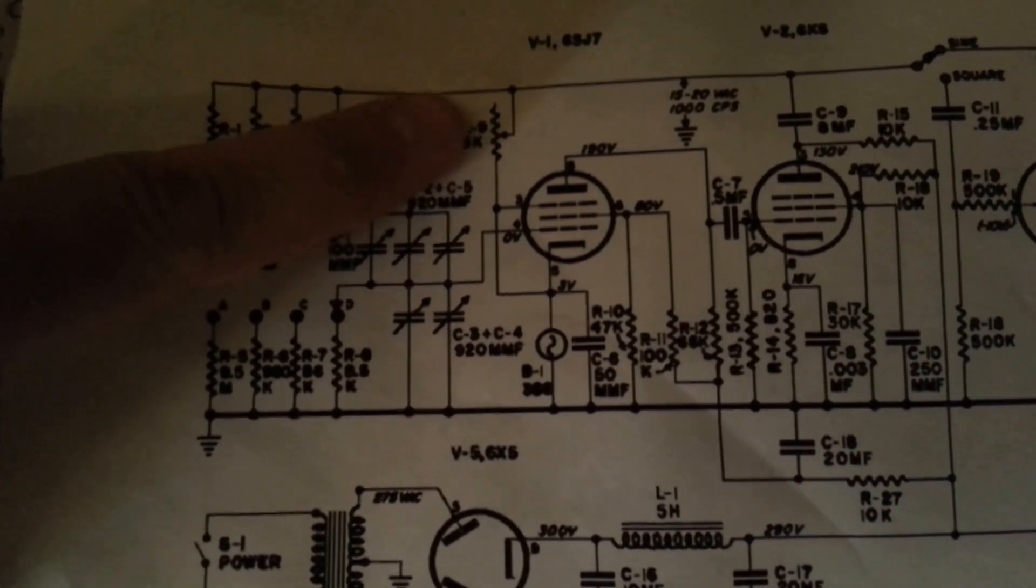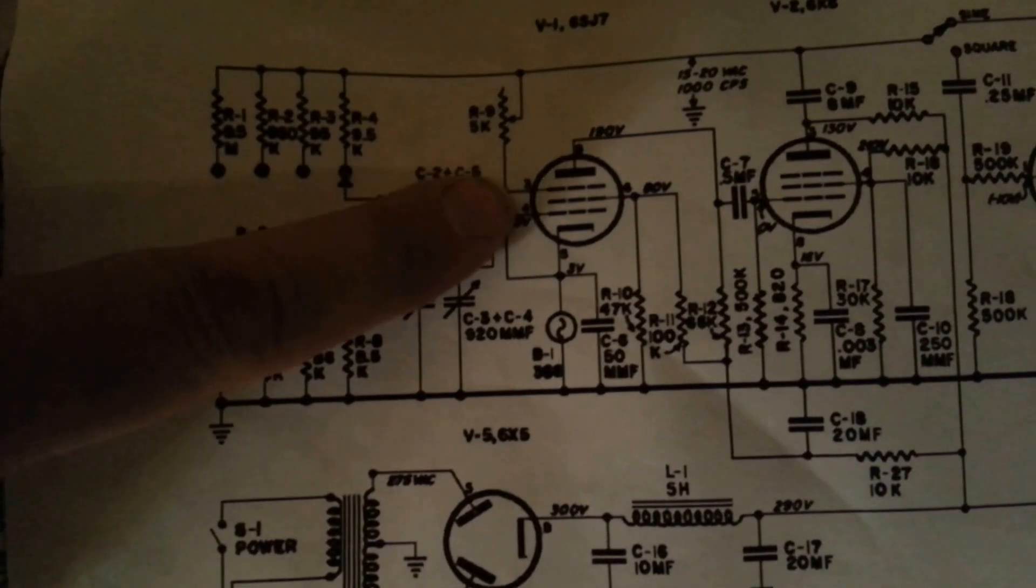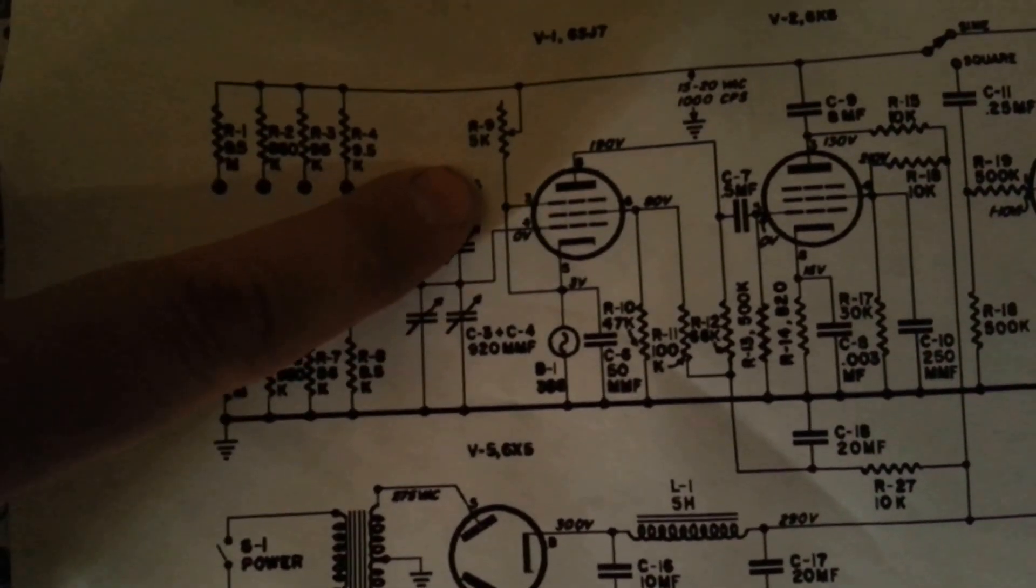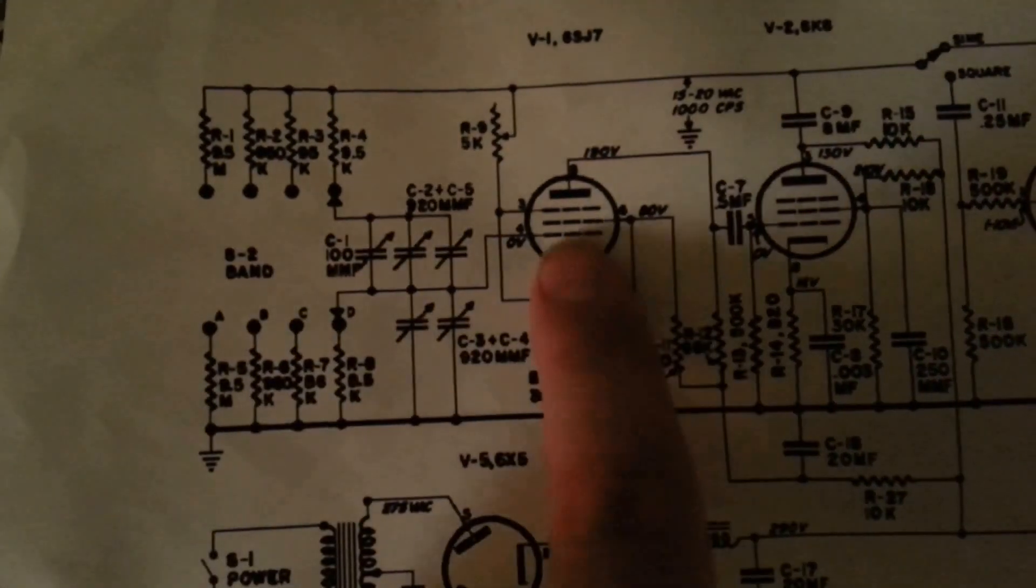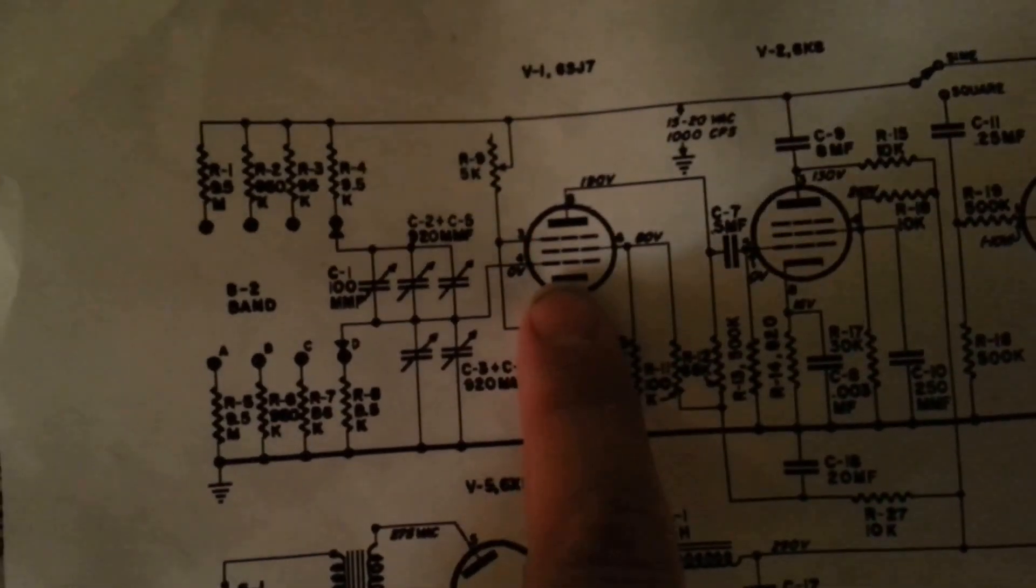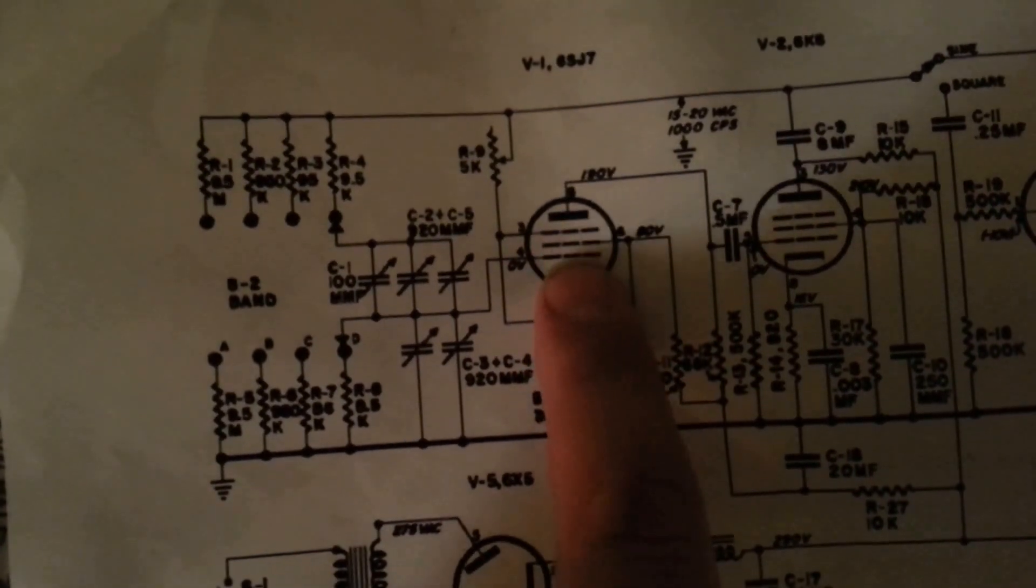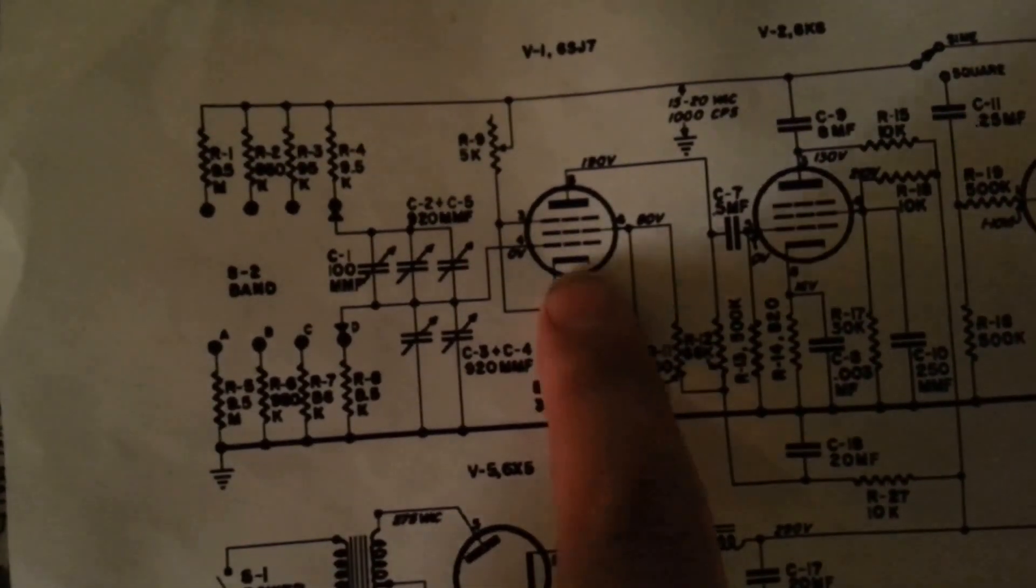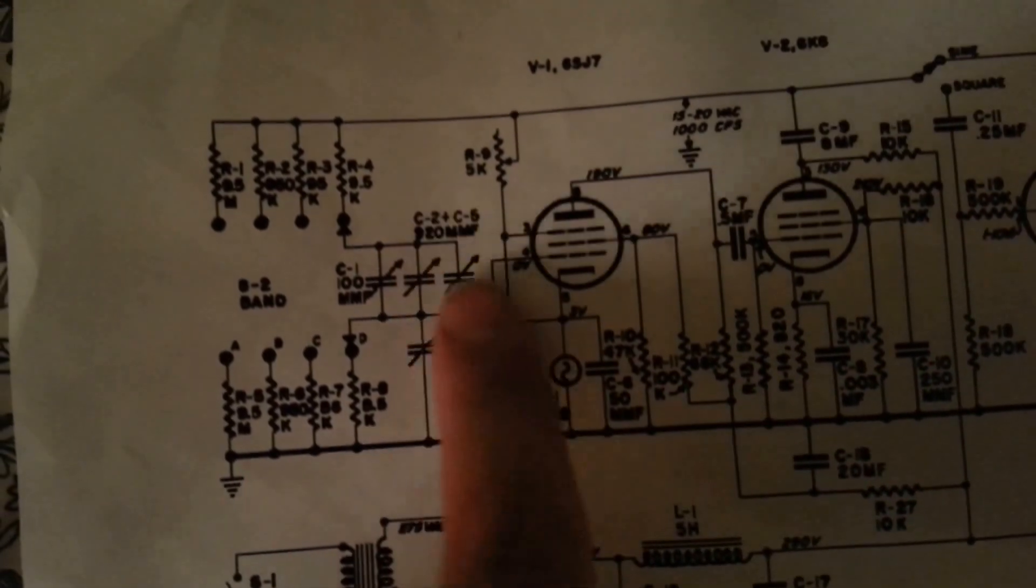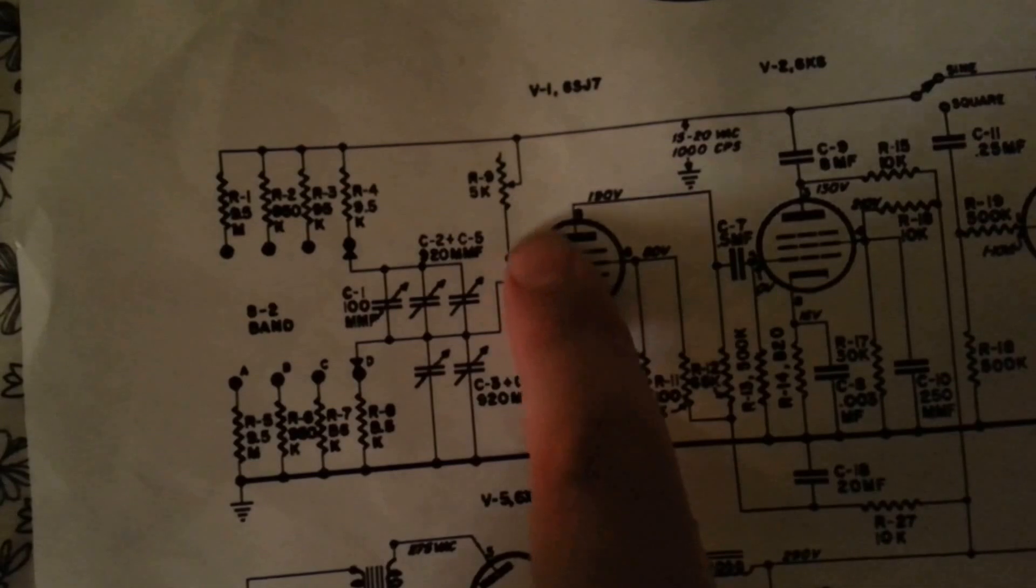This variable resistor is used to control one of the grids of the 6SG7 or 6SK7 in this case, so you can adjust the operating parameters of the oscillator, tune it up so it's running stable.